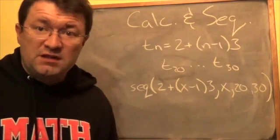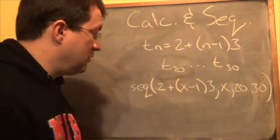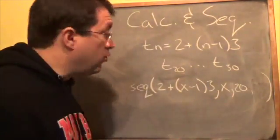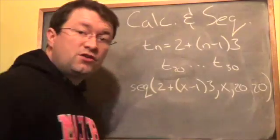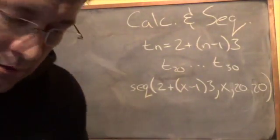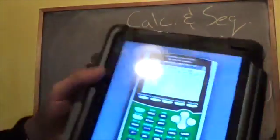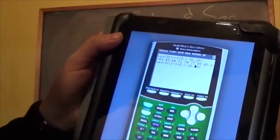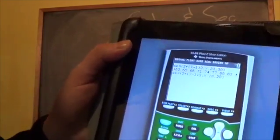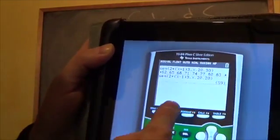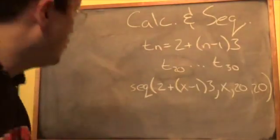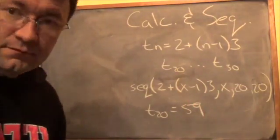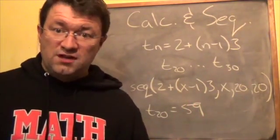If you wanted to know very specifically what the 20th term is, instead of entering 20 comma 30, you would enter 20 comma 20. Press Second, Enter to pull up the previous entry, change it to 20 comma 20, and it tells you that the 20th term is 59.